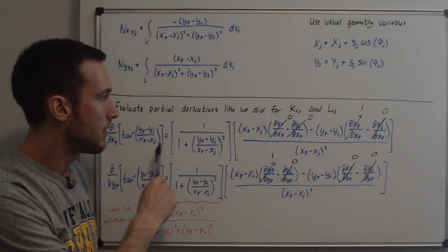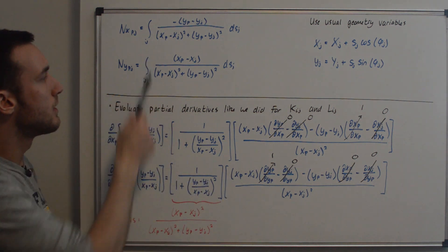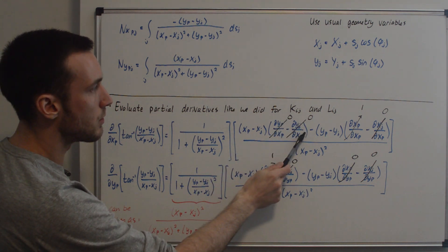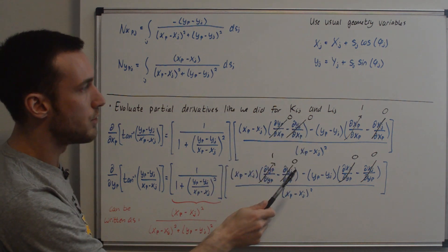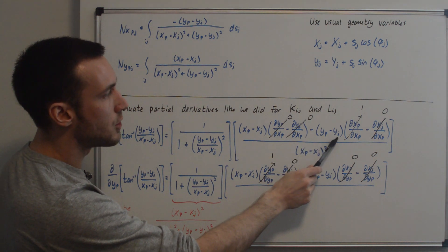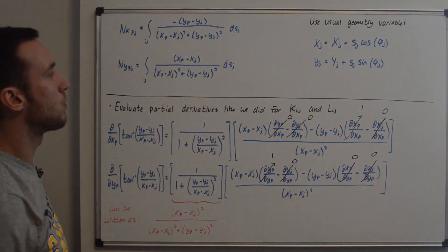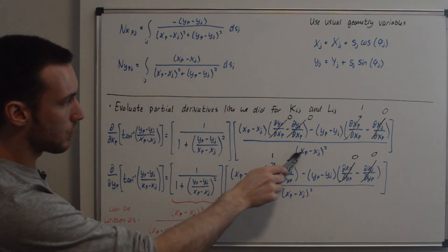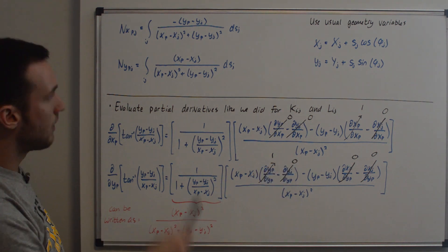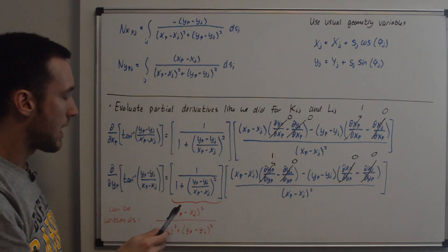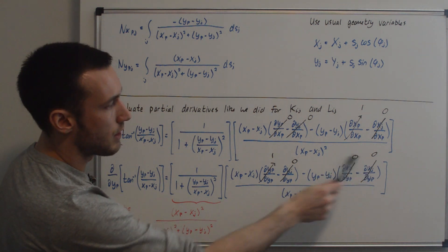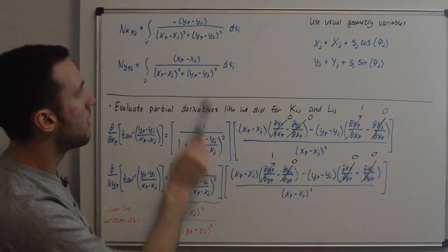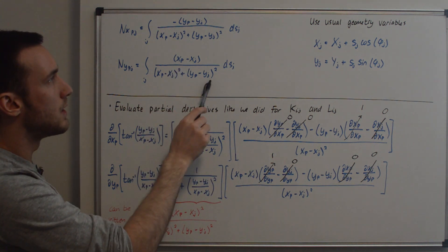Simplifying: for the Vx term, since both zero terms vanish, the numerator becomes negative (y_P minus y_j), and the denominator simplifies because the matching terms cancel — leaving just (x_P minus x_j)^2 plus (y_P minus y_j)^2. For the Vy term the same happens: zero terms cancel, and the numerator becomes (x_P minus x_j), with the same denominator.